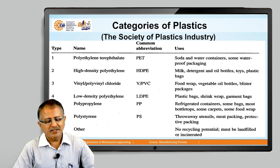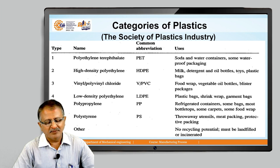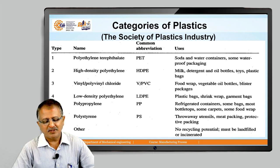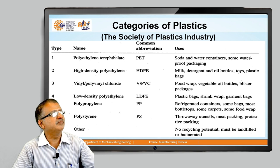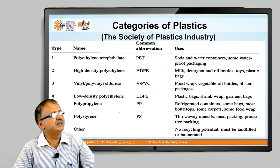The Society of Plastic Industry established a classification system in 1988 to allow consumers and recyclers to identify different types of plastics. Manufacturers place special codes or numbers on each plastic product. Categories include PET — polyethylene terephthalate — used for soda and water containers and waterproof packing.